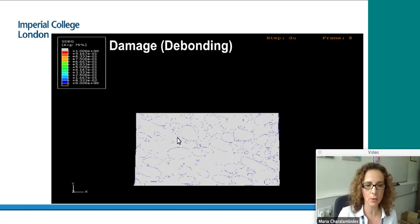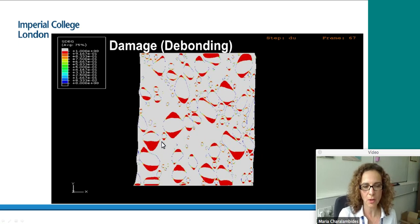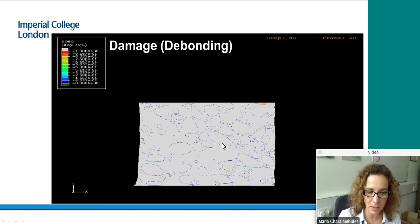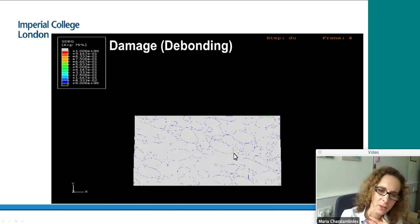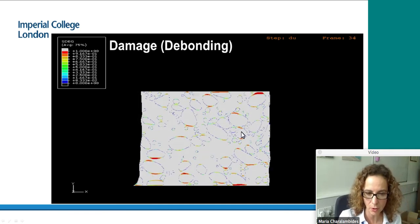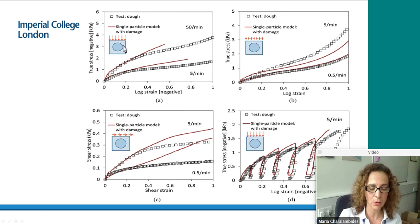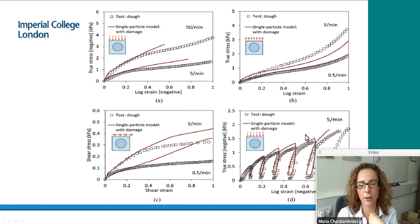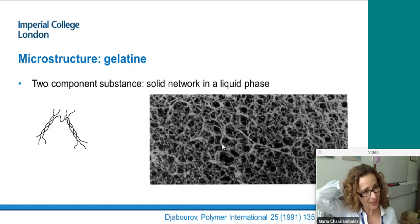Debonding happens preferentially at larger particles — a well-known effect because stresses are higher there — and also around particles that are very close together, where stresses build up. The model fits the experimental data derived from laboratory tests where you compress, tension, and shear a lump of dough. The fit isn't perfect but needs some improvement; however, it's quite a good replication of what's happening in practice, both for compression and loading-unloading cycles.